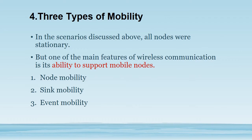The fourth scenario is mobility, which is an important parameter in wireless sensor networks that must be considered during design. Three different types of mobility are covered: node mobility, sink mobility, and event mobility.